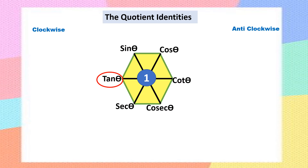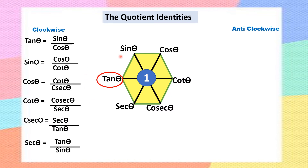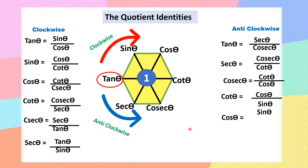To recap: the quotient identities give us 12 formulas — six clockwise and six anticlockwise — all starting from tan theta. In clockwise direction, tan theta equals sin theta over cos theta; anticlockwise, tan theta equals secant theta over cosecant theta. You only need to remember how to draw this hexagon.